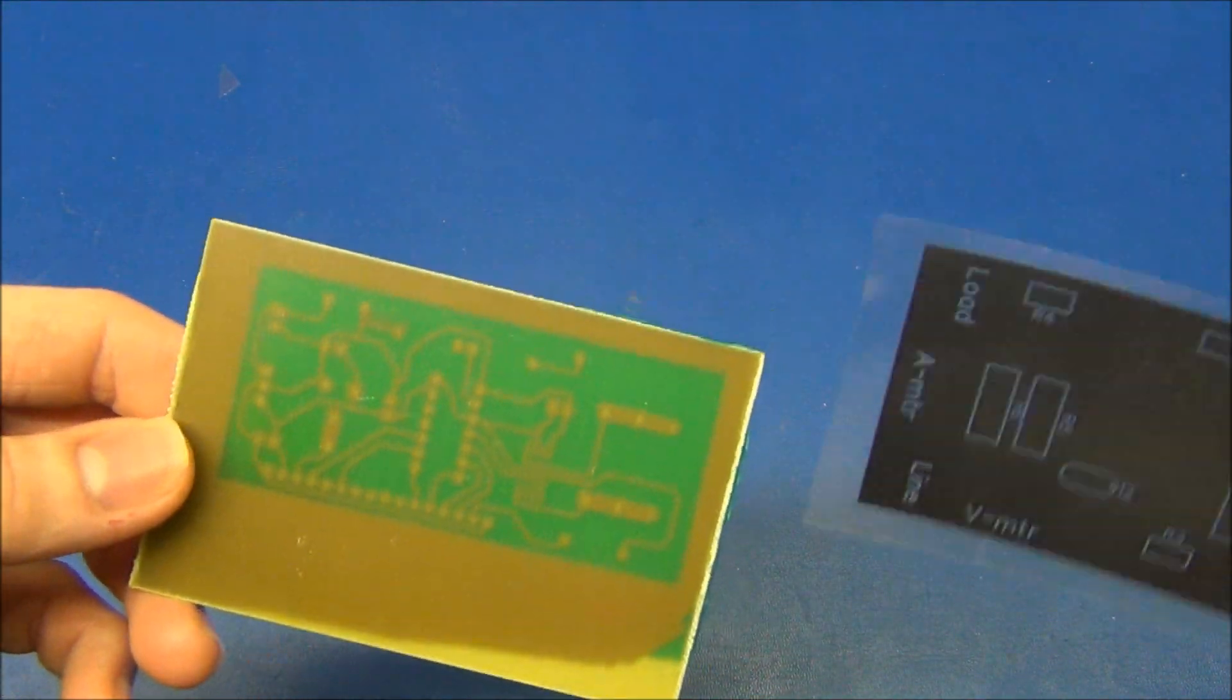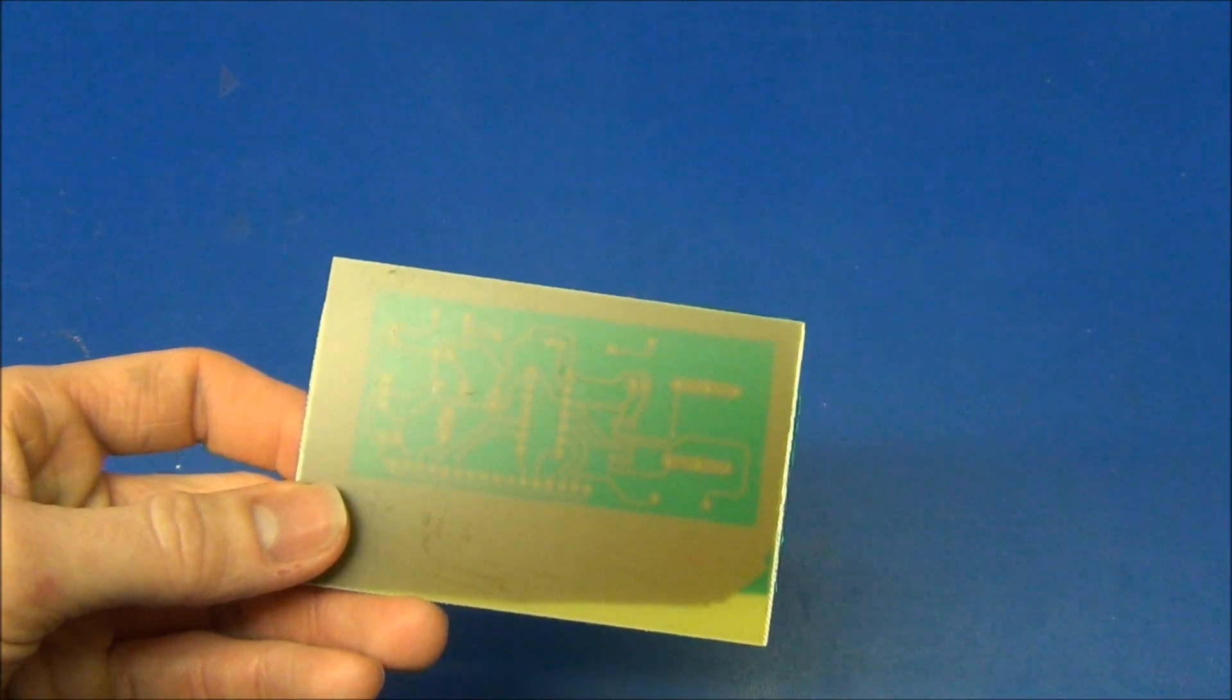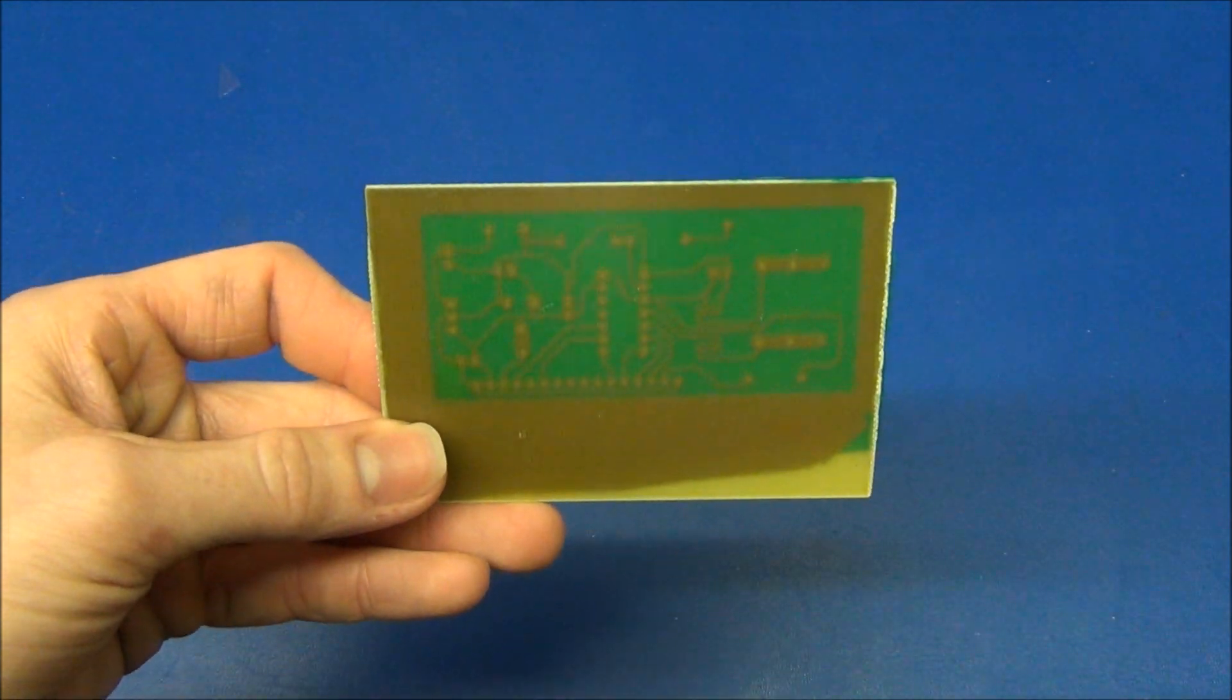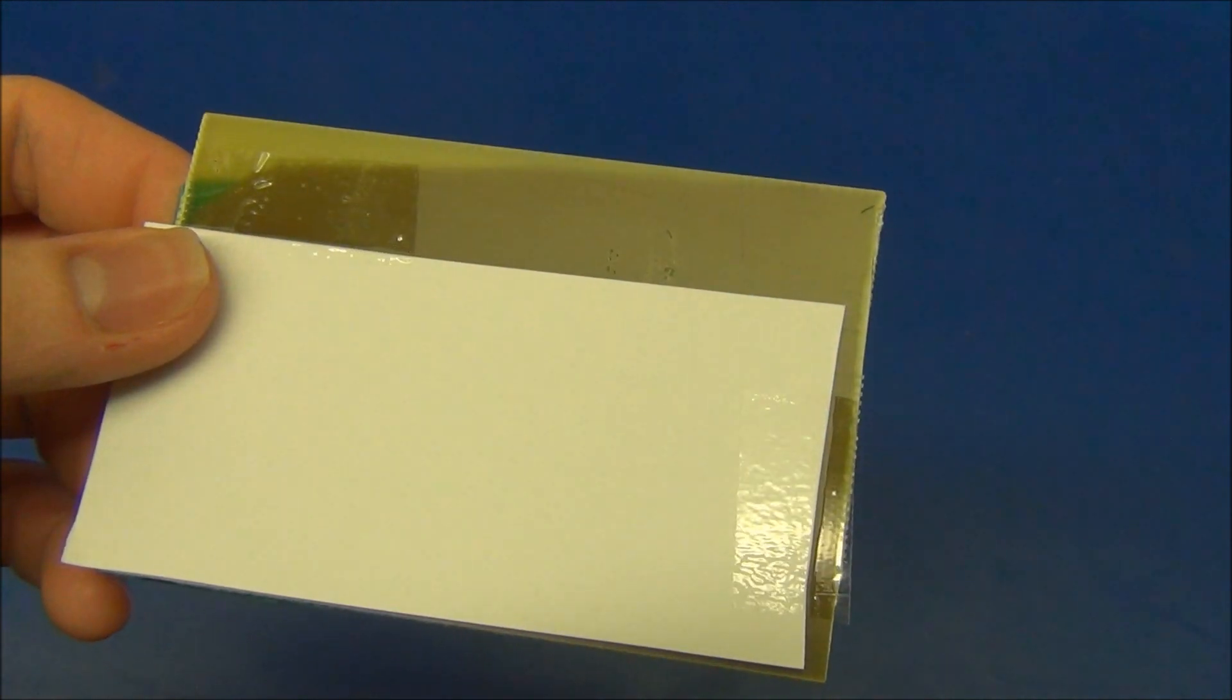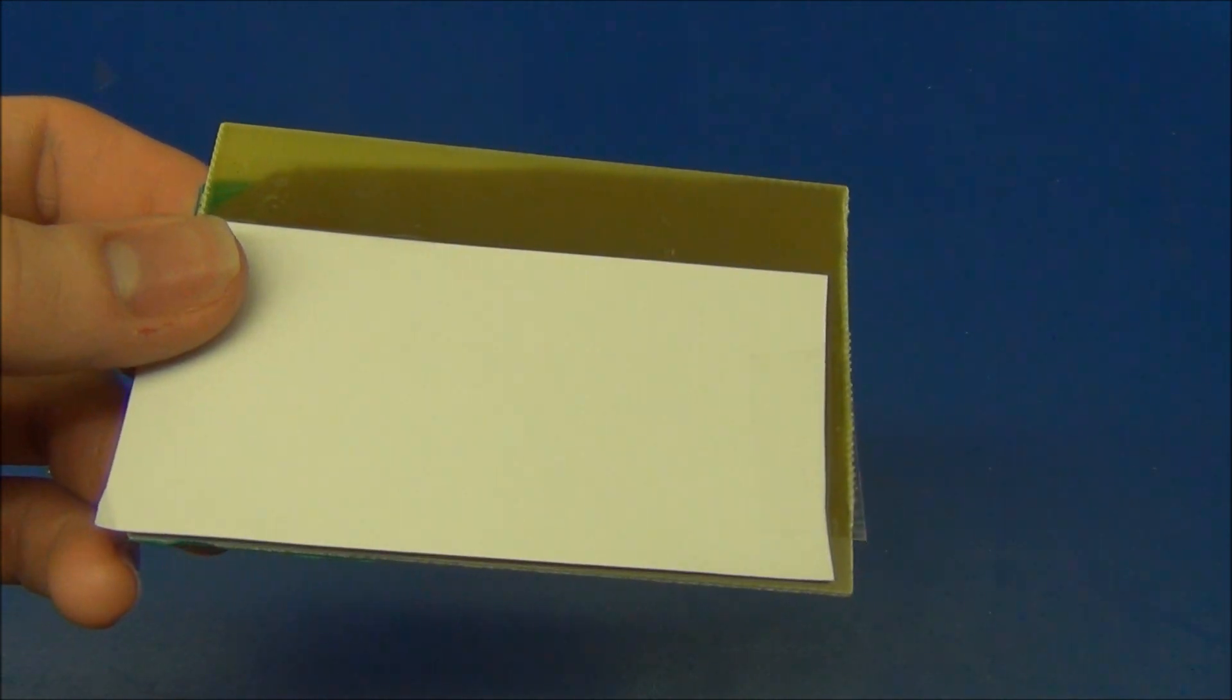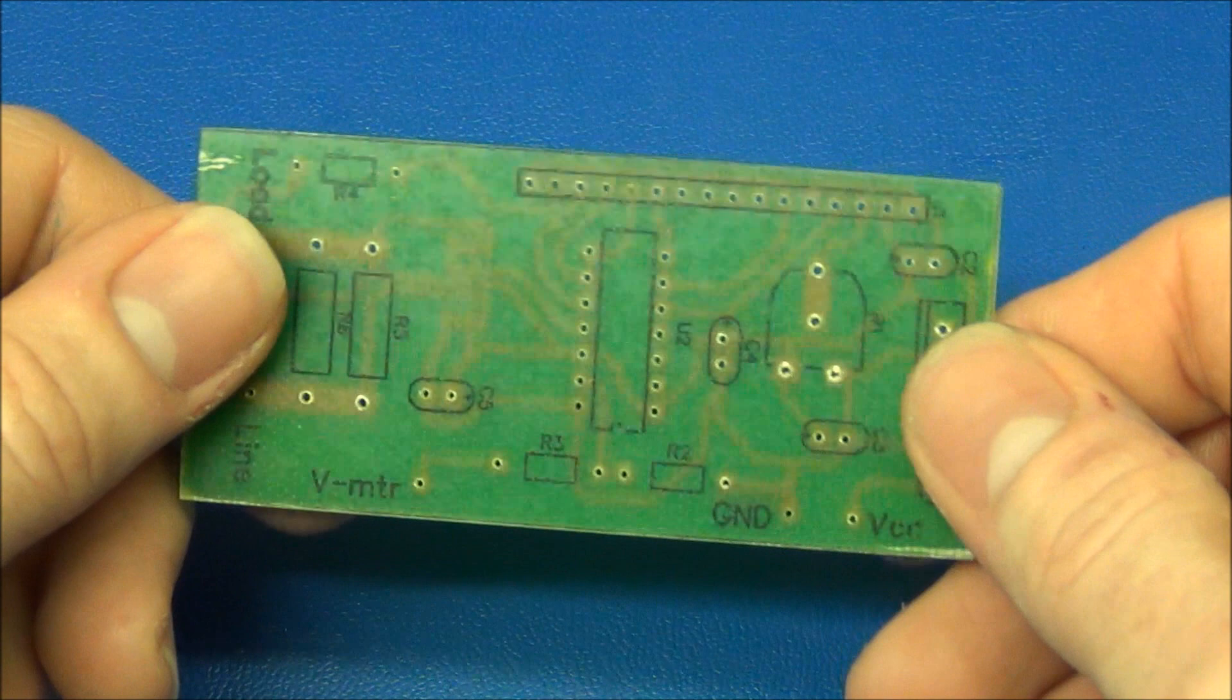Now we can make the silk screen just as we made the solder mask on the back side. But I prefer to use the toner transfer method to make the silk screen. Check out my tutorial on the toner transfer method to see how to do this. And here is the finished board after applying the silk screen.